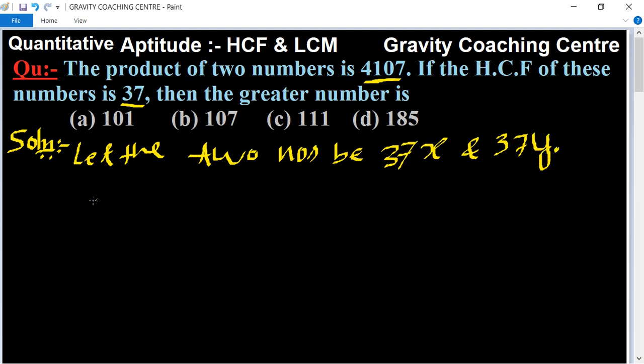So, their product is 4107. According to the question, 37X into 37Y equals 4107.